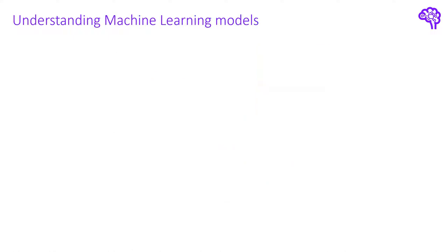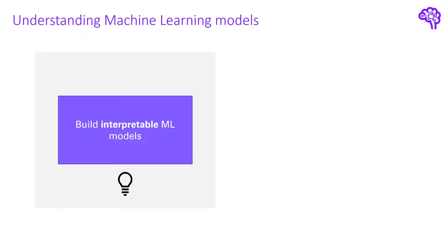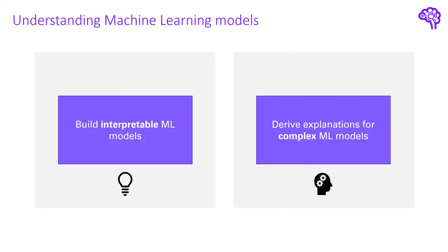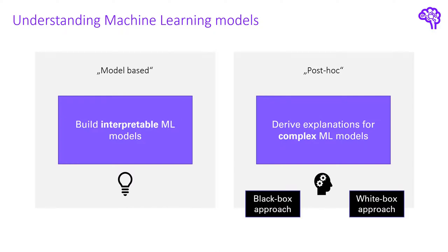Therefore we generally have two options. Either we ensure that the trained machine learning algorithm can be interpreted, or we need to derive human understandable explanations of a complex trained model. In the literature this is usually called model-based or post-hoc. Post-hoc methods can be further divided into black box approaches and white box approaches. Black box approaches means we don't know anything about the model — we only use the relationship between inputs and outputs, so the response function, to derive explanations.